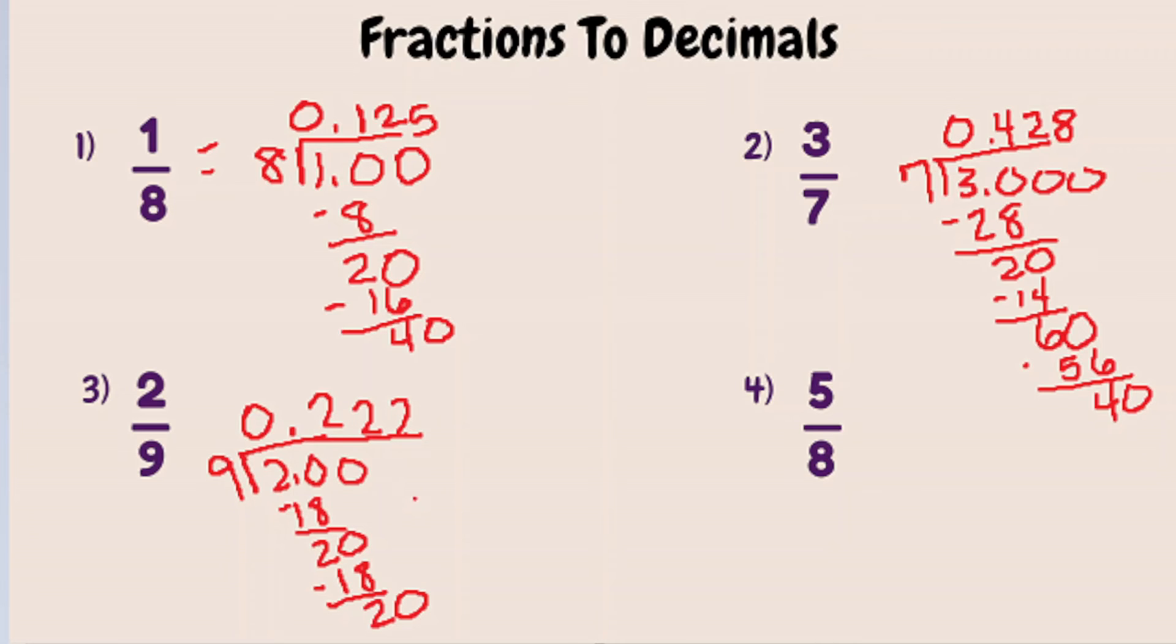So you can use something called a vinculum that you put over top of this two here, and that means that that decimal keeps repeating forever. So two ninths is equal to 0.222... Two keeps on repeating.